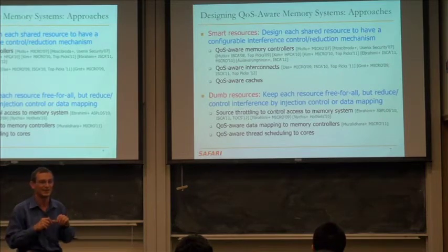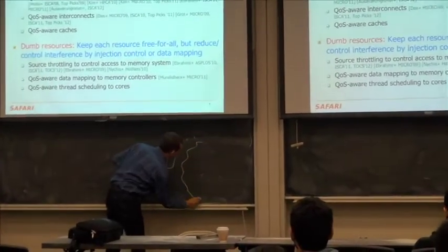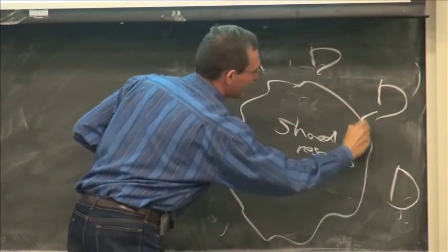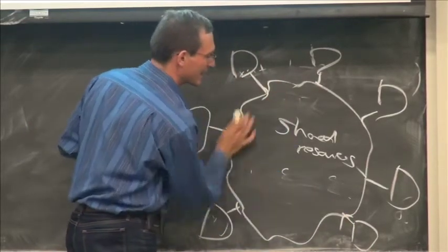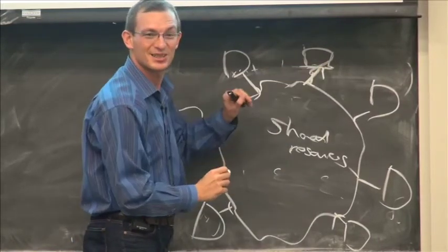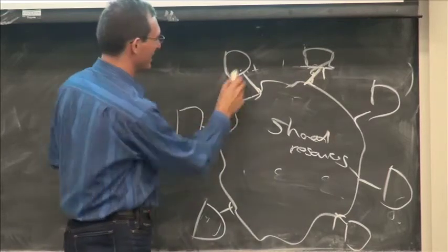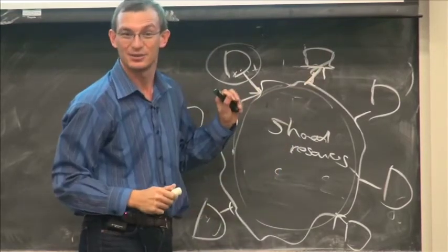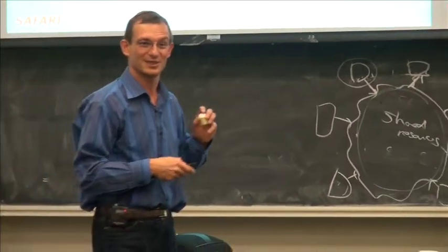You could do the same thing for the entire chip. You have agents injecting requests into shared resources. What the dumb resource approach does is you figure out what's happening and have some distributed or centralized control that tells an agent it's injecting too much — reduce your injection rate for better overall system performance. That's the idea with source throttling: you don't have too much intelligence in the shared resource, but you have the ability to say stop injecting for a while or inject at a smaller rate. That's very different from designing the resources to be smart, like Atlas. But it turns out the best approaches are usually a combination of both.